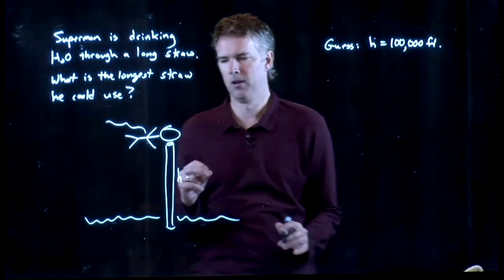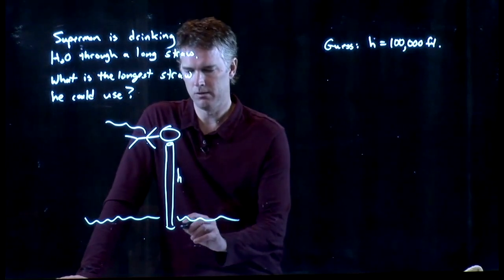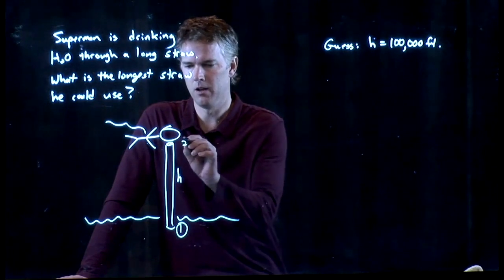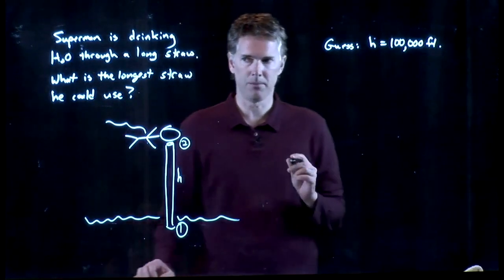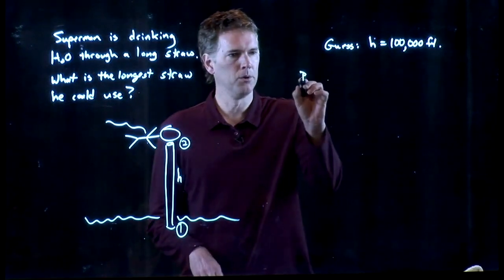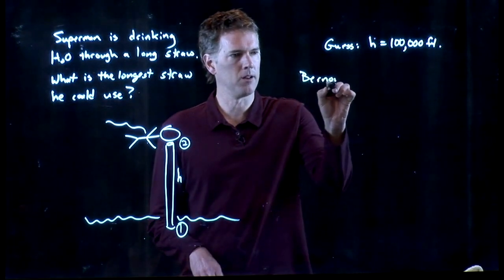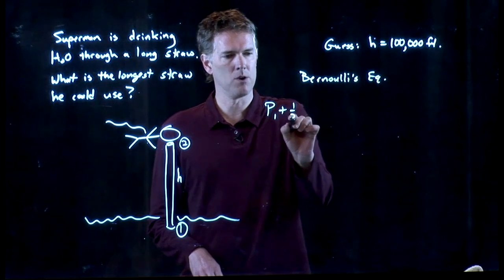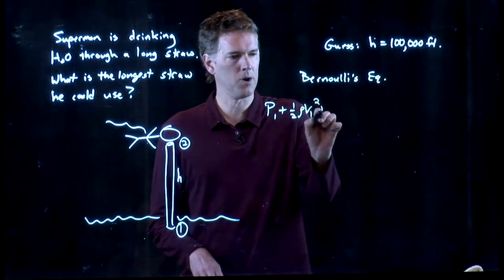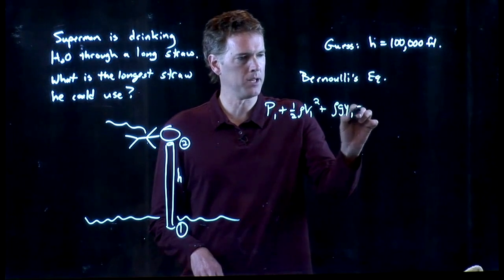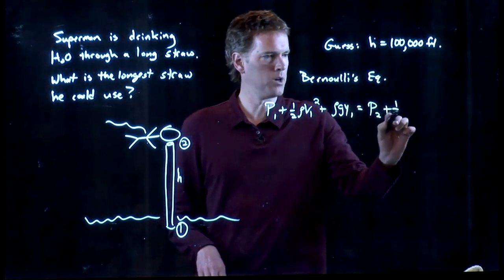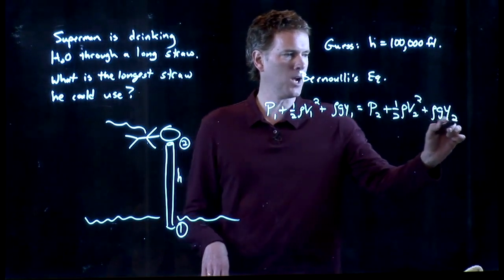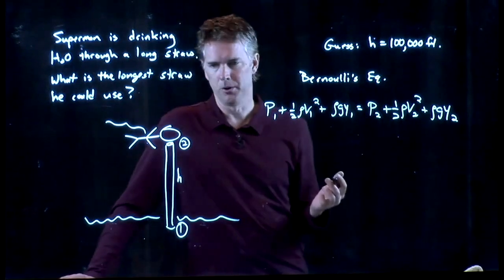All right. How do we attack this problem? The way we attack this problem is Bernoulli's equation. This is region one down here. This is region two up at the other end of the straw. Bernoulli said the following. P1 plus one half rho V1 squared plus rho GY1 equals P2 plus one half rho V2 squared plus rho GY2. This is Bernoulli's equation.